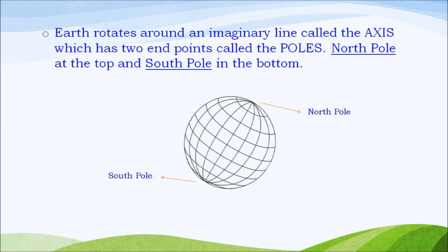Earth rotates around itself on an imaginary line called the axis which has two end points called the poles. North pole at the top and south pole at the bottom.